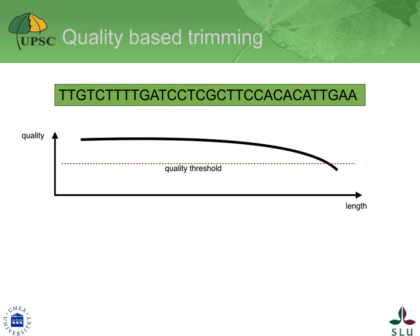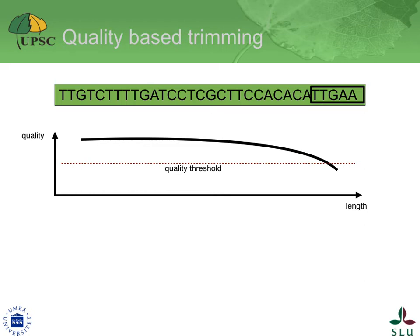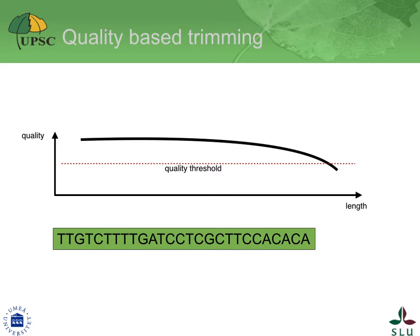The quality-based trimming uses a window-based scanning. In this example, a window of 5 base pairs — the rectangle — will scan the read. The quality of the read is depicted as a graph under the sequence. The red line represents our selected cutoff. The scanning window will go through the read, and whenever the average quality of the 5 bases in the window goes below our cut threshold, the read will be trimmed at that position. This results in a shorter read with a higher average quality.